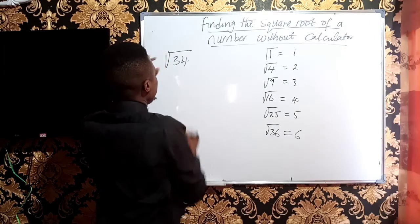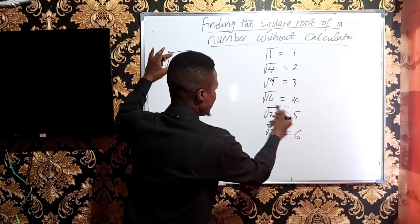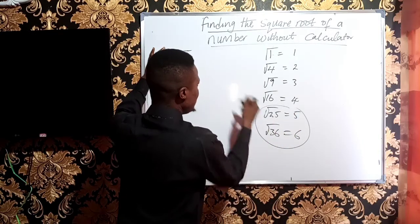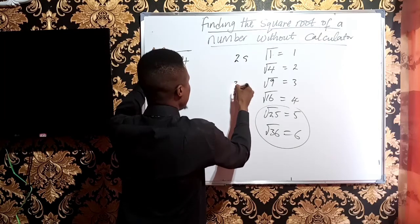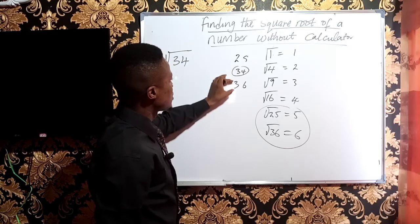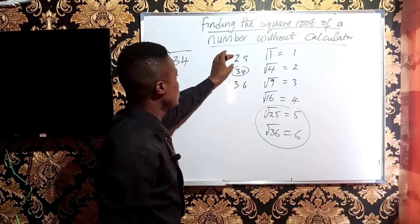Now this 34 is in between 25 and 36. This is where it will fall in. 34 as a number is in between 25 and 36, which are perfect squares. And this 34 is closer to 36 than 25.